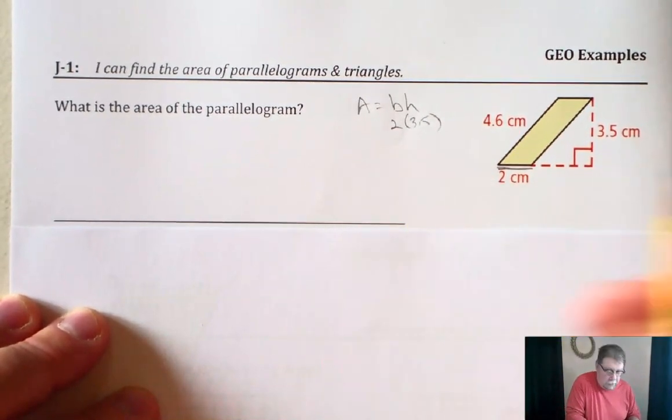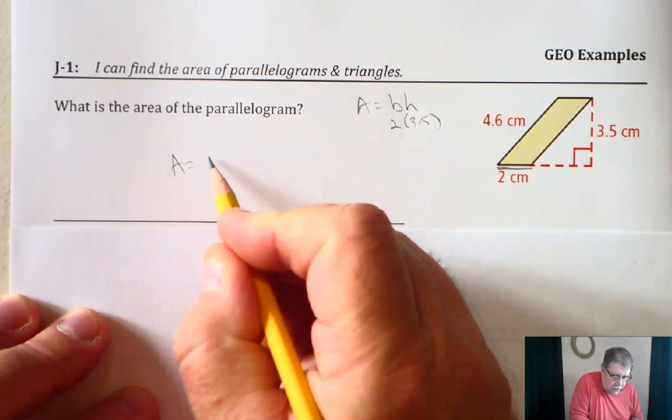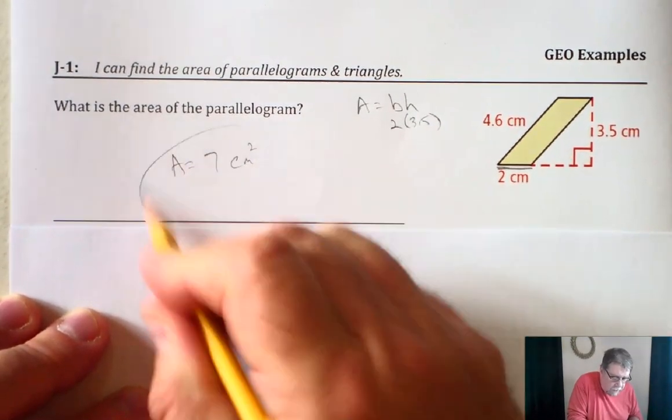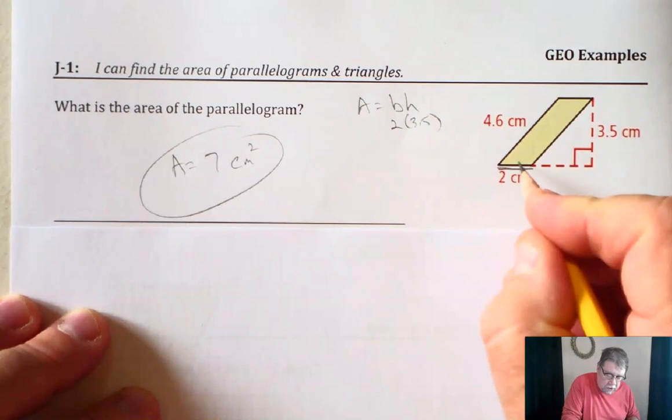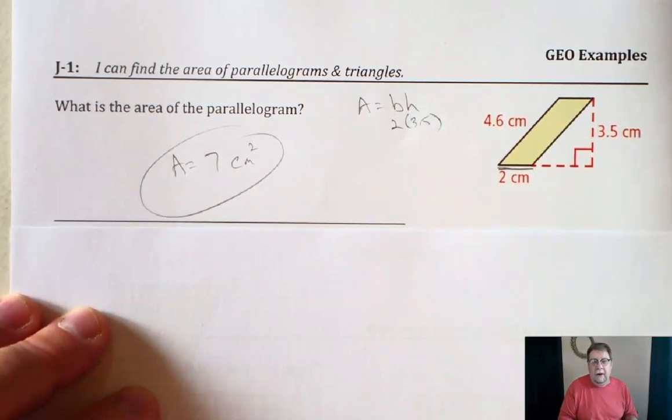So simply have to multiply 2 times 3.5, so the area is 7, and that's going to be square centimeters. It's the number of squares that would fit inside this parallelogram.